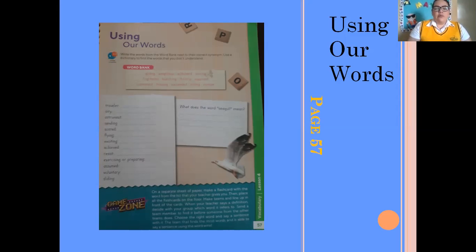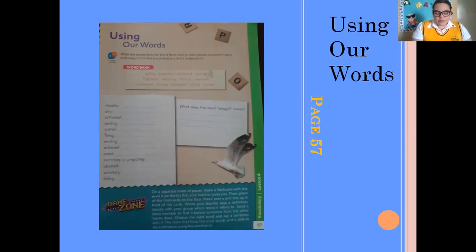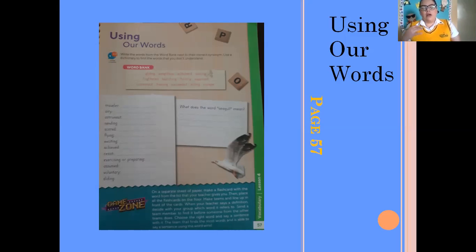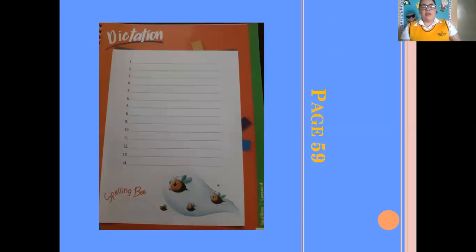Or you can ask your parents' permission to look for the synonyms on Google — you can Google them. Use a dictionary to find the words that you don't understand. You have 14 words and you have 14 options in the word bank, so you are going to write their corresponding synonym. Then you are going to write what the word 'seagull' means — look into the dictionary for the meaning of the word 'seagull'. Once you finish, we're having a dictation.